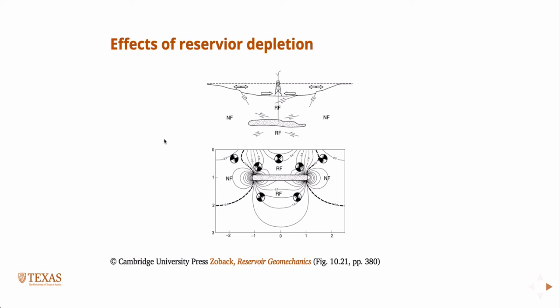In this case, the other assumption is that the horizontal stresses are identical. Assuming that horizontal stresses are identical, these contours represent the change in horizontal stress due to depletion. For example, this line right here — there's a three on that line — that represents a three times magnification of the compressive stress due to depletion. So basically, three times an increment of horizontal stress per increment of pressure depletion.